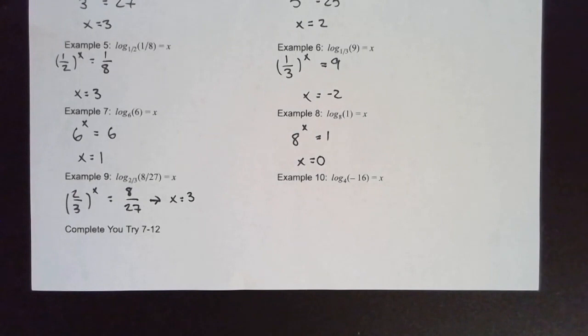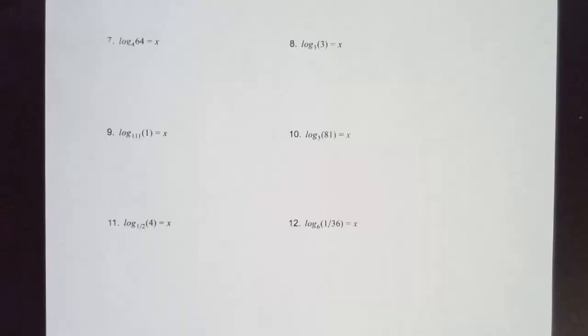For our last example: 4 to what power gives us negative 16? This is undefined — there is no exponent I can raise 4 to to get a negative number. If we look at our log graph, we can see there is no graph for a negative input. Go ahead and pause the video and try U-tries 7 through 12. Here are the answers — if you have any questions, please come to my office hours or see Miss Claire Wills or Miss Parsons. Have a good day.